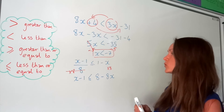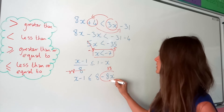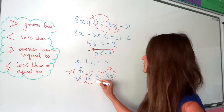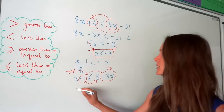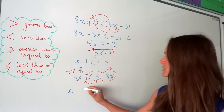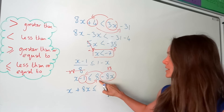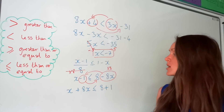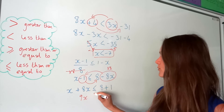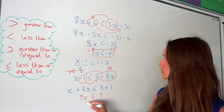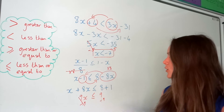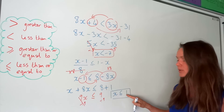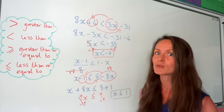Now it looks like the previous example — x terms on both sides. I'm going to move the smaller x term to the left-hand side, and the minus 1 to the right. The ones that move change sign, so x stays, and the minus 1 changes to plus 1. The minus 8x changes to plus 8x. So 1x plus 8x is 9x, and on the right-hand side that gives me 9. Dividing by 9, x is less than or equal to 9 divided by 9, which is 1. So x could be 1, 0, minus 1, minus 2, and so on.